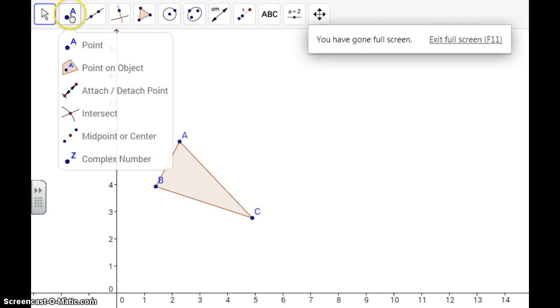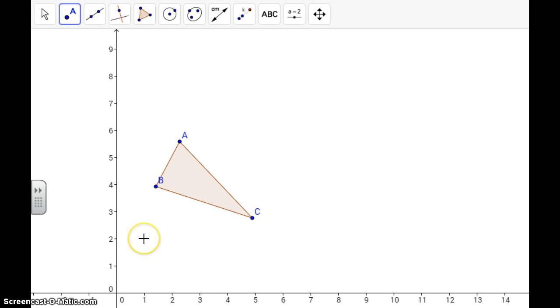Okay, after I have my polygon, I now want a point that's going to serve as my center of dilation. So I'm just going to put my point anywhere. I could put it anywhere on the grid, but I'm just going to put it right here.